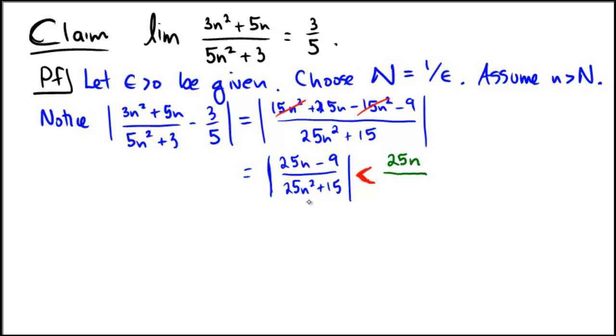And in the bottom, instead of using 25n squared plus 15, I'm just going to use 25n squared, because my argument on the denominator is I made my denominator smaller by ignoring the plus 15, and thereby my fraction has become larger.